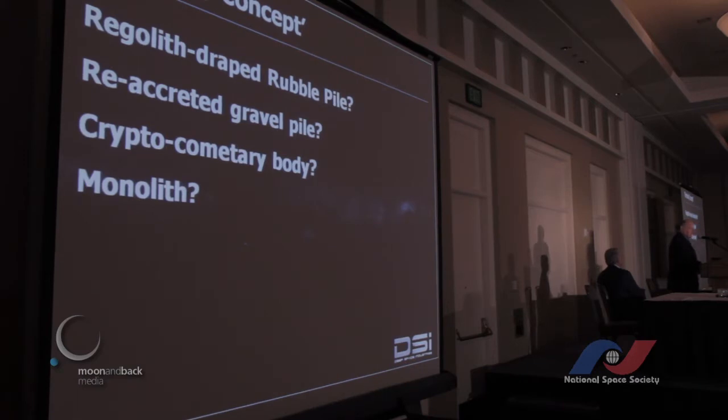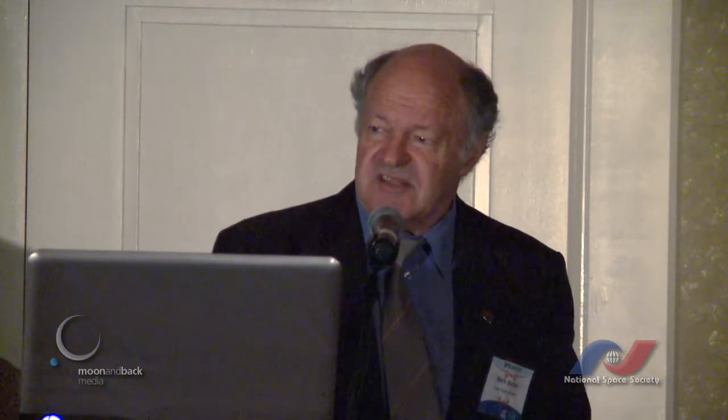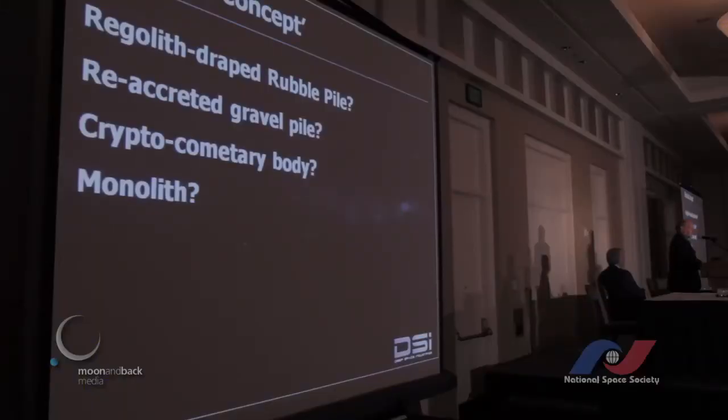In the asteroid circumstance, we have to get our ore body concept right, just as we do in terrestrial circumstances. I've come across cases where the ore body concept was not properly understood, and as a result the mine failed to recover something like 50% of the value it could have recovered. Some mines have failed totally because management had an incorrect or incomplete concept of the ore body. With asteroids - what's our ore body concept? Is it a regolith-draped rubble pile, a re-accreted gravel pile, a cometary body, or a monolith? If we choose wrong, we could have a project totally fail.